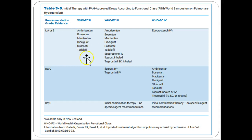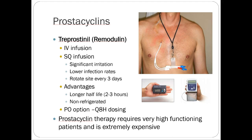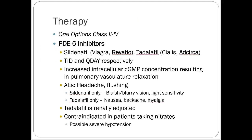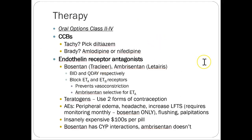For the exam on pulmonary hypertension, I'm not going to ask you to classify patients or determine where to place them on medications. I want you to know the prostacyclin names — treprostinil and epoprostenol are IV or subcutaneous infusions, versus PDE-5 inhibitors and endothelin receptor antagonists, which are oral medications. Know the basics of that and you should be fine. I only ask a couple of questions on pulmonary hypertension.